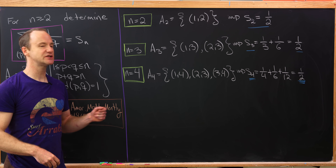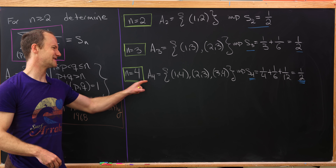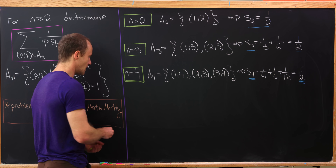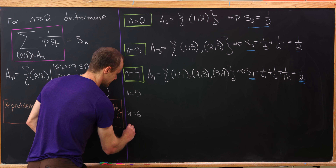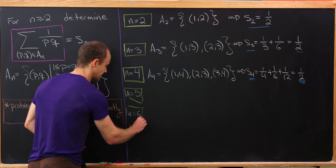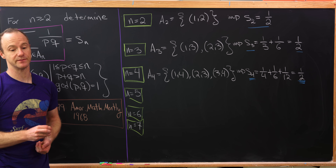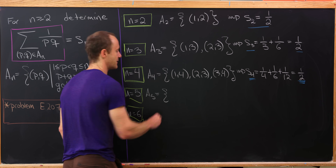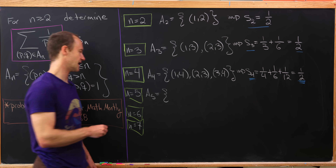I think it's a pretty good guess that this sum is always equal to one half. That being said, let's do a couple more examples — not just to calculate the sum, but to get an idea of what the set A_n looks like. I'll let you check that in each case the sum is also equal to one half.